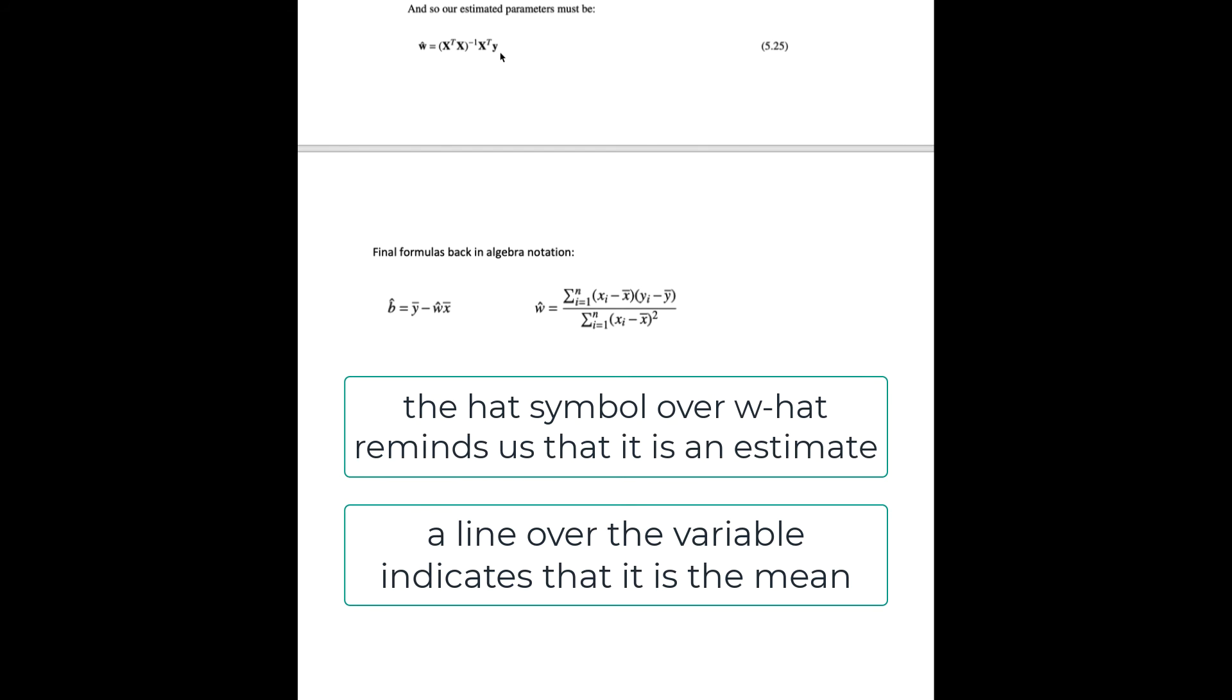Let's take this matrix notation for our w hat and rewrite it back in algebraic notation. What we see is that we're going to sum over all of our examples the difference between the x value and the average x value times the difference in the y value and the average y value